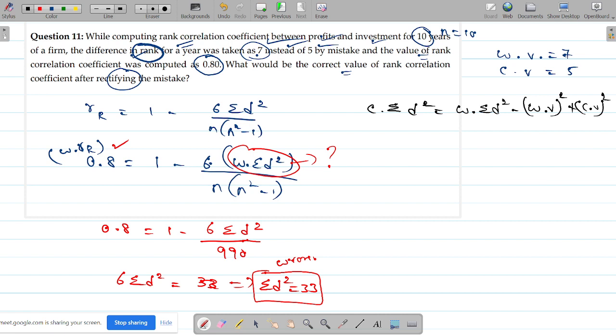Correct summation d squared equals wrong summation d squared minus wrong value squared plus correct value squared. I have to get the square removed and the square added. You should not forget this one. This value is 33 minus wrong value is 7, so 7 squared to be reduced and 5 squared to be included. So what is the final value? It is 9.